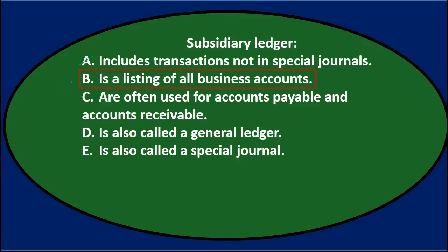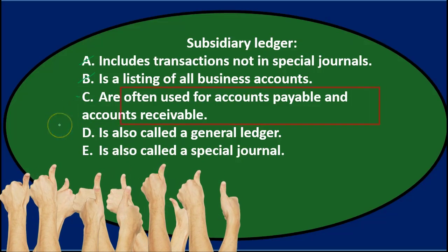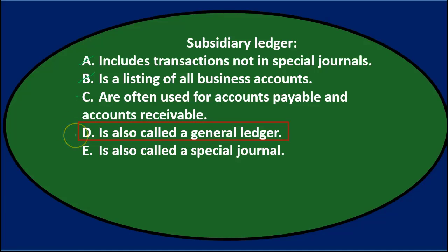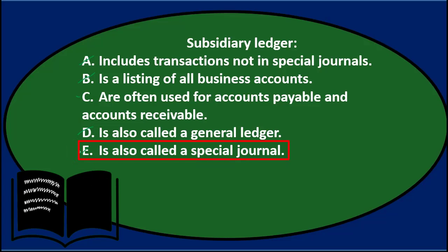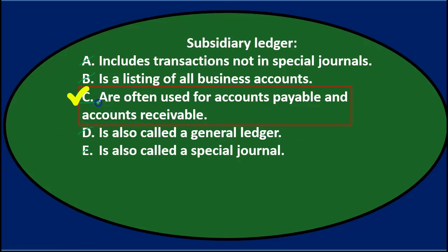B — a listing of all business accounts — that's just a chart of accounts, so that's not it. C — are often used for accounts payable and accounts receivable — when we think about subsidiary ledgers, those are the first two we apply it to, so C looks good. D — also called the general ledger — we want to keep those separate; the subsidiary ledger provides more detail than the general ledger. E — also called the special journal — that's something different entirely. So we're left with C. Subsidiary ledger C — are often used for accounts payable and accounts receivable.